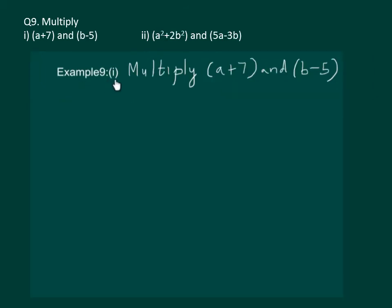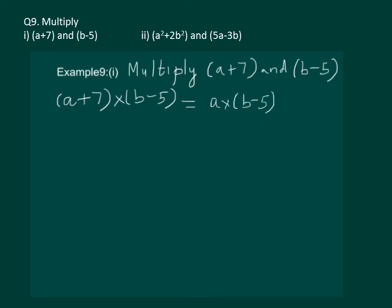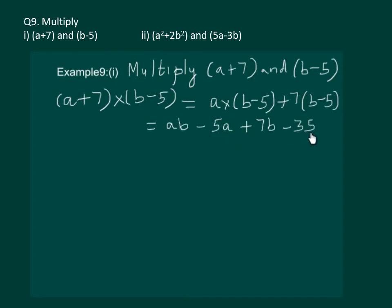Let us start example 9, first part. We have to multiply (a plus 7) with (b minus 5). Distributing the first bracket, we have a multiplied by (b minus 5), plus 7 multiplied by (b minus 5). This gives us ab minus 5a, plus 7b minus 35. Note there is no like term here, so this is the required answer.